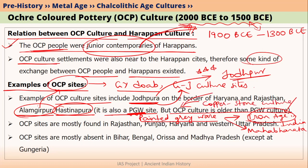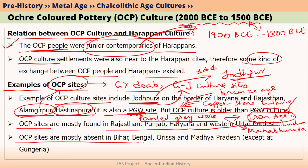OCP sites are mainly found in Rajasthan, Punjab, Haryana, and Western Uttar Pradesh. Moreover, OCP sites are mostly absent in Bihar, Bengal, Odisha, and Madhya Pradesh. However, in Madhya Pradesh, we have an OCP site called Gungeria, from where we have found copper hoards.